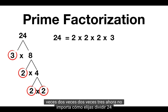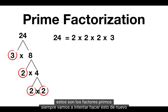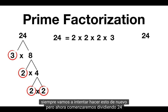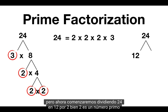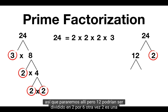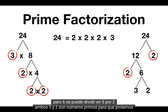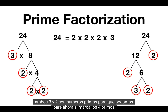No matter how you choose to split up 24, these are the prime factors you'll always get. Let's try doing this again, but now we'll start by splitting 24 up into 12 times 2. Well, 2 is a prime number, so we'll stop there, but 12 could be split up into 2 times 6. Again 2 is a prime number, but 6 can be split up into 3 times 2. Both 3 and 2 are prime numbers, so we can stop.